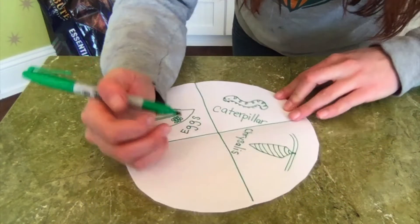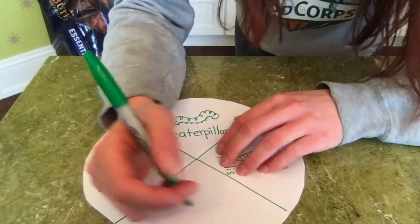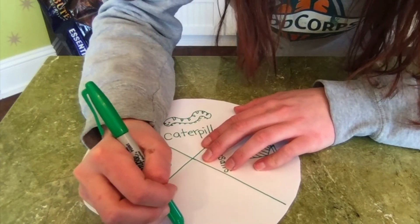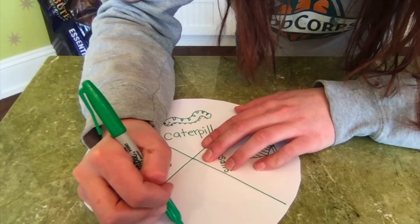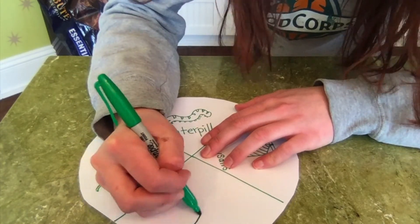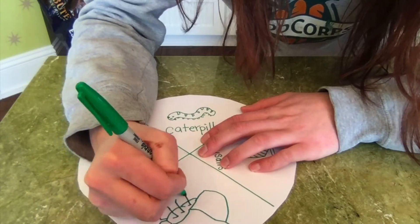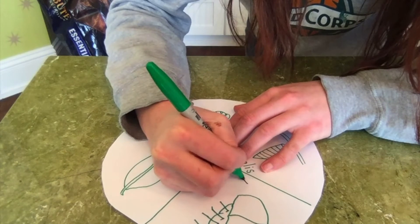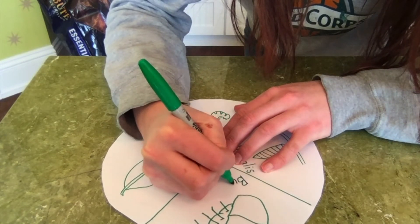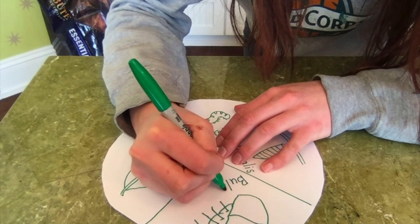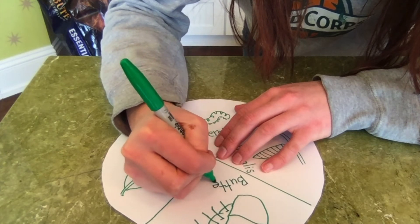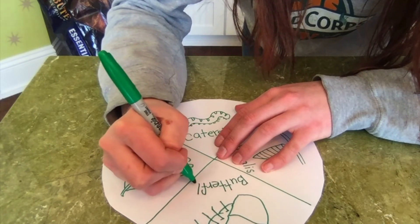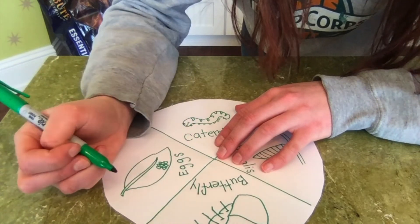And then once the butterfly has sat in there for a while, it emerges as a beautiful adult butterfly. So here we can draw our beautiful adult butterfly. Let's label our butterfly. B-U-T-T-E-R-F-L-Y. Butterfly.